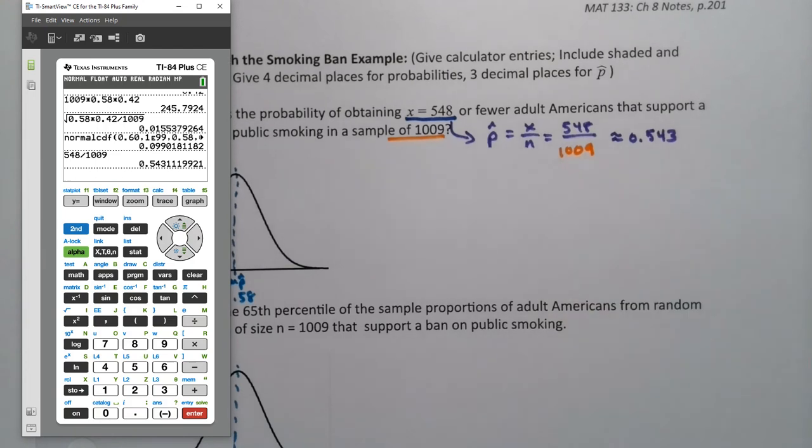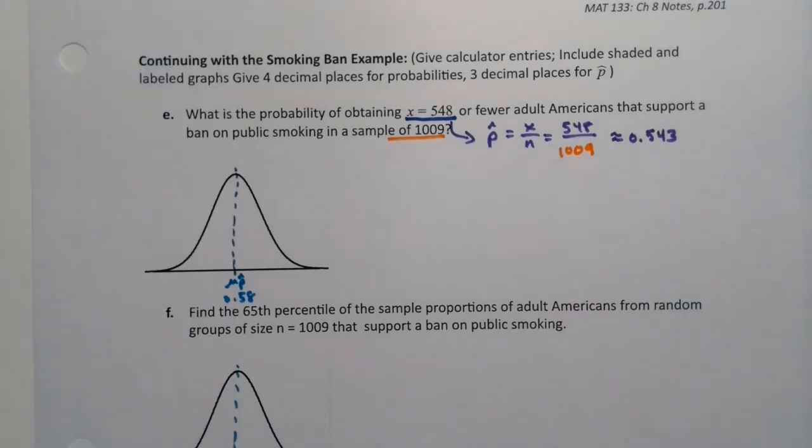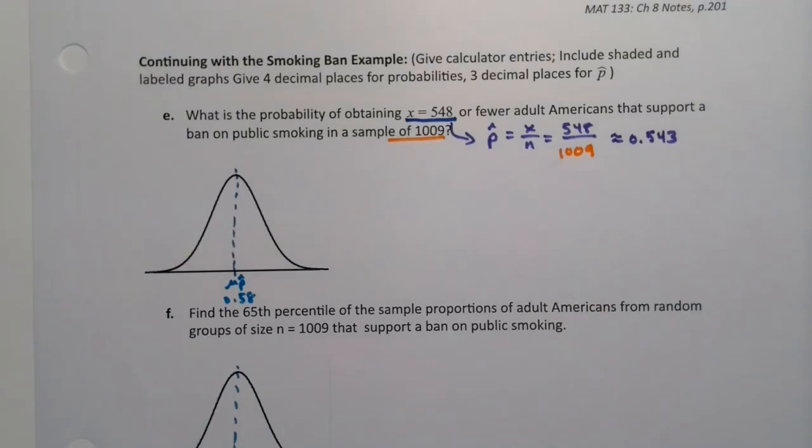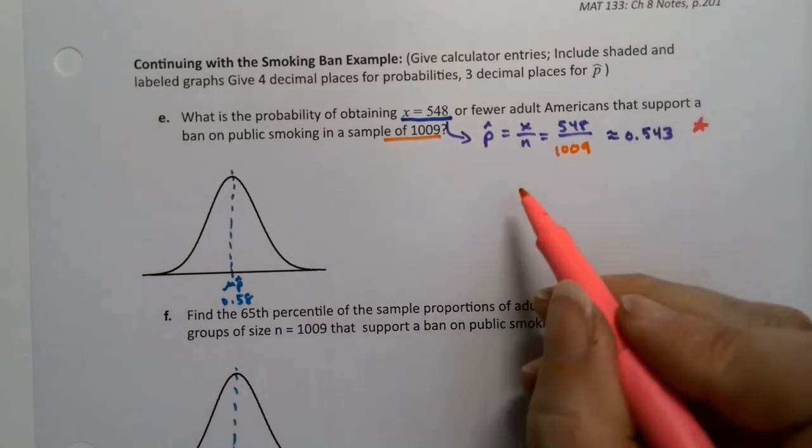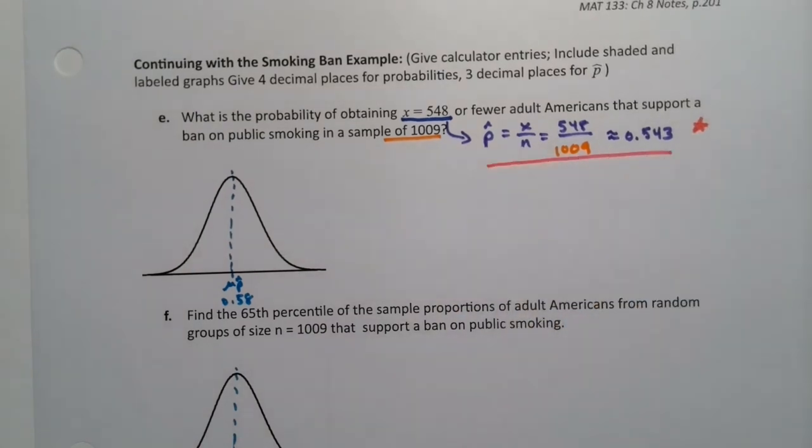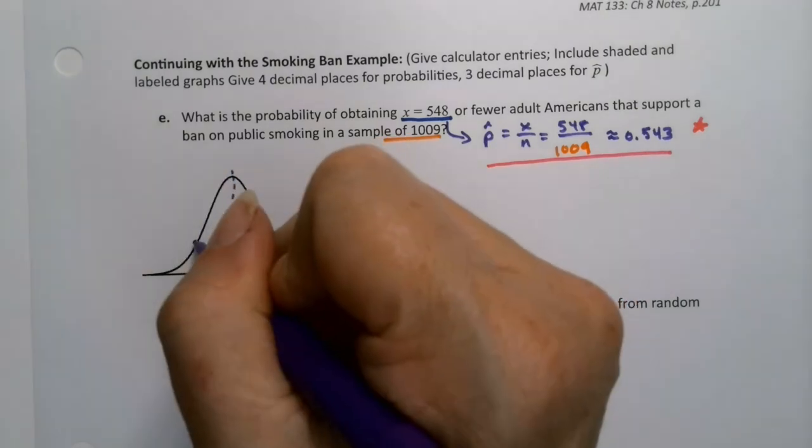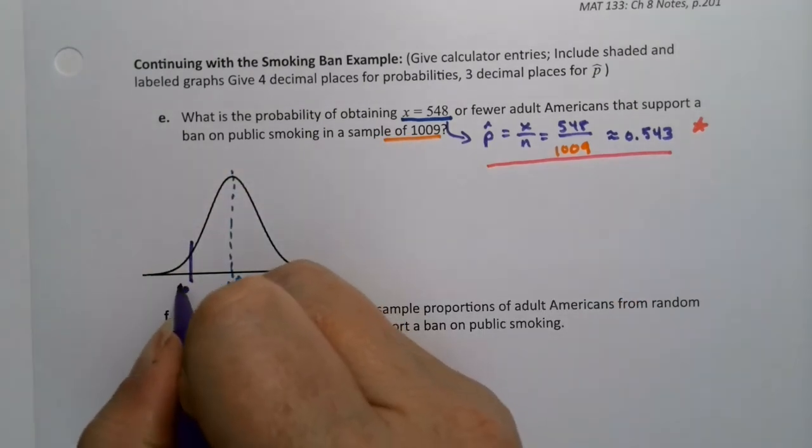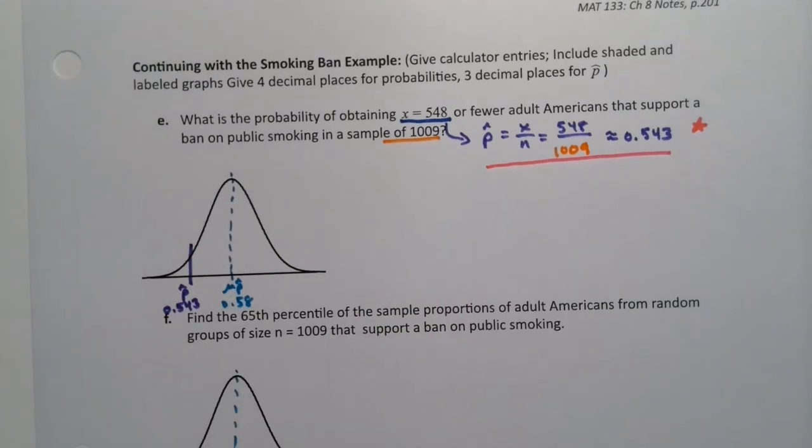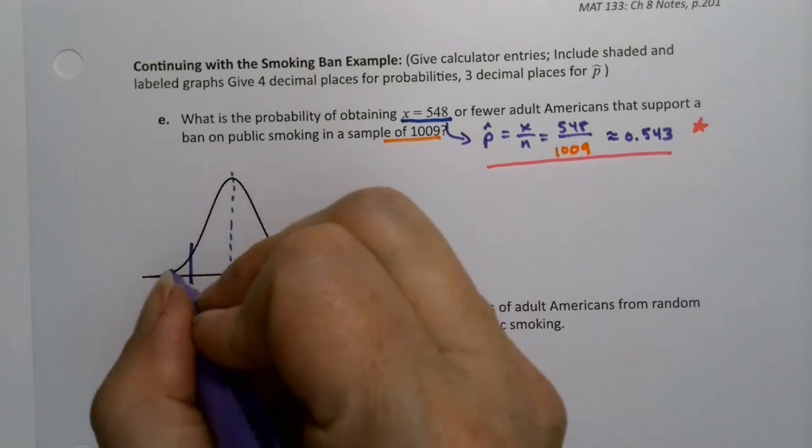This little calculation we're doing is very easy, but we're going to use it a lot in chapters 8, 9, 10, 11. So it's a nice little one to star. I know that 0.543 is over here somewhere. So I'm going to put p-hat and say 0.543. That's my labeling. And then I'm going to shade to the left over here.